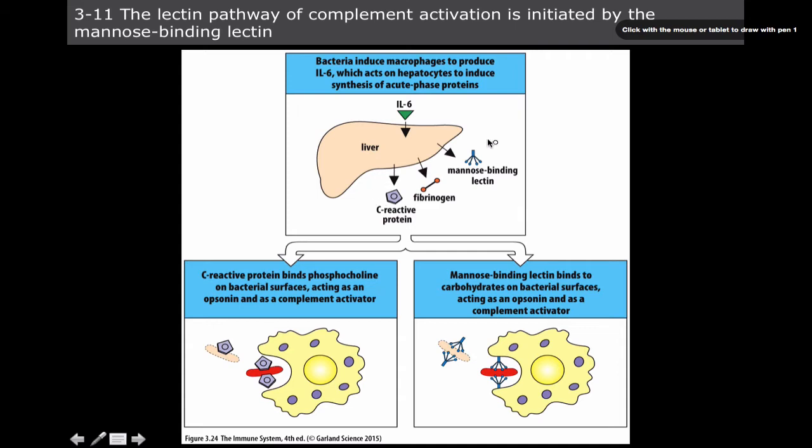And even though C-reactive protein and mannose binding lectin have different structures, they actually have very similar ways in which they activate and work.